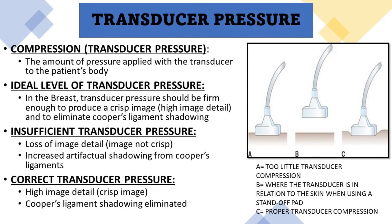When optimizing a breast ultrasound image, one of the most important factors that's often overlooked, especially by new sonographers, is the amount of transducer pressure being applied. New sonographers tend to barely push down with the transducer, meaning they have to do a lot more work to get their images optimized. When firm transducer pressure is applied, the image is crisp with good resolution, and it also eliminates artifactual shadowing known as Cooper's ligament shadowing. Unless the exam is slightly uncomfortable for the patient, it's likely that you're not using adequate transducer pressure to get a high quality diagnostic image.